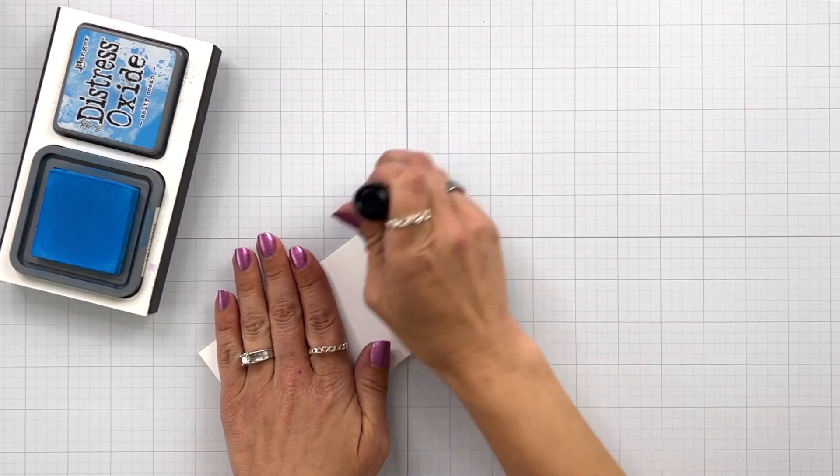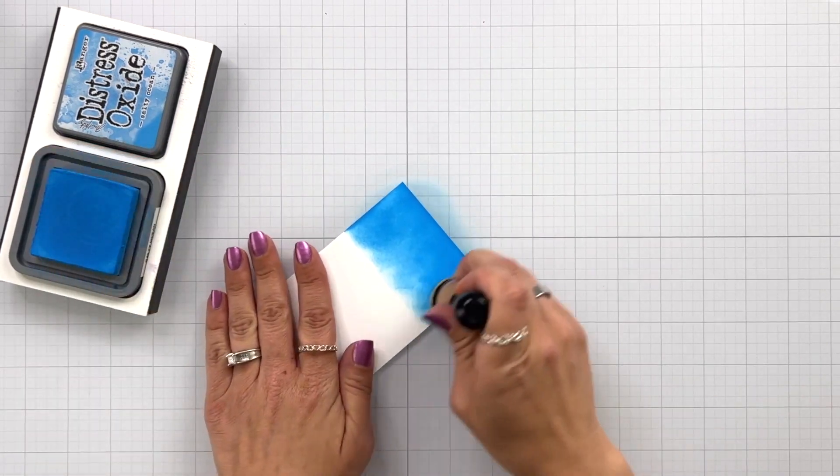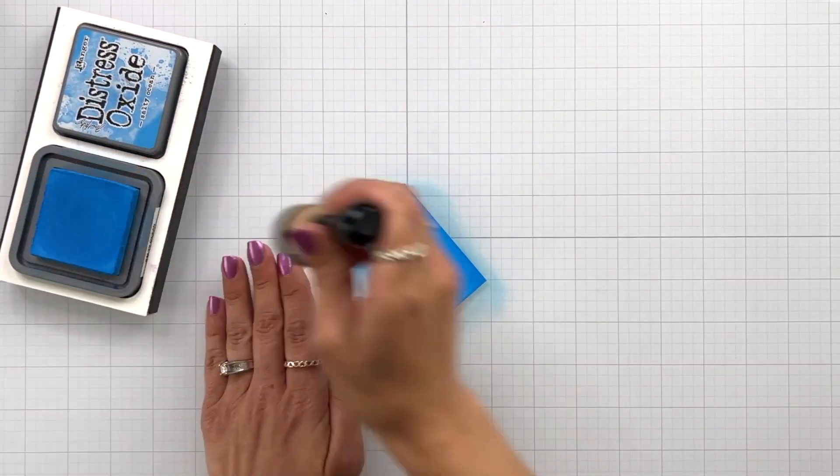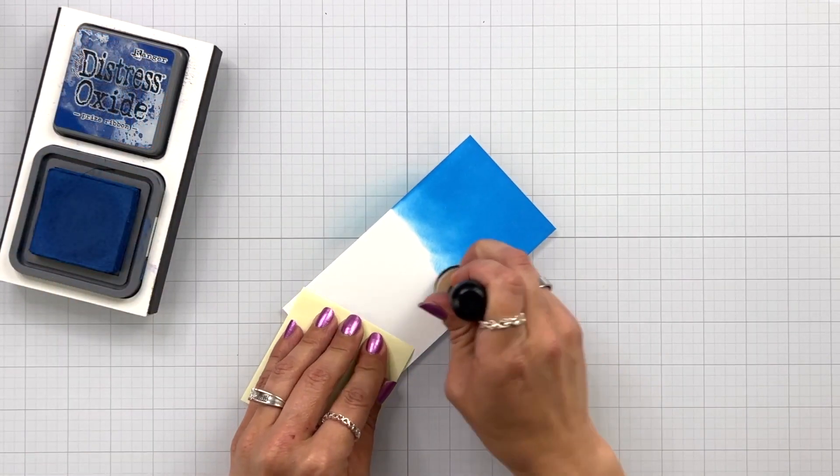To create my scene I have a piece of 80 pound white cardstock cut to 3 by 6, so it's a mini slimline size. I started by ink blending the bottom half with Salty Ocean Distress Oxide ink using my blending tool.